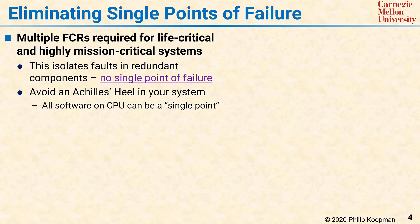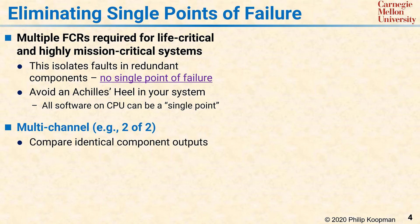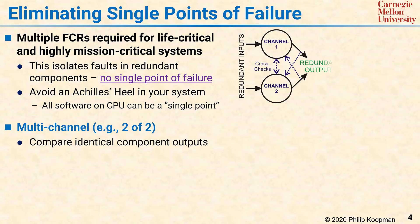There are three major patterns for avoiding single points of failure. The first is the multi-channel architecture pattern. This uses two or more computers to perform redundant computations and cross-check the results. A common way this pattern appears in embedded systems is the so-called two-of-two pattern. Two computers, called channel 1 and channel 2, cross-check their computations and also check the outputs of the other channel. Each channel is designed to be a separate fault containment region.